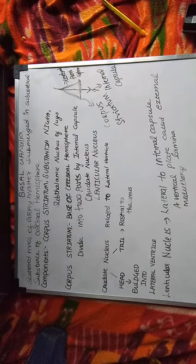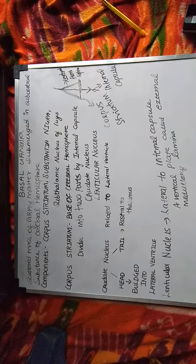The basal ganglia is nothing but a kind of grey matter. These are scattered in the subcortical area. Let's look at this — that is the first two lines.